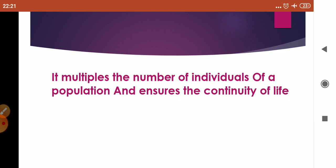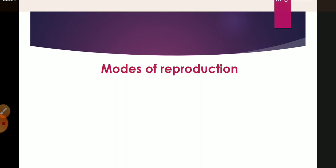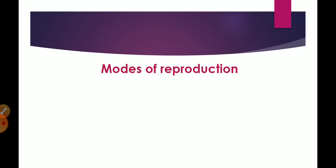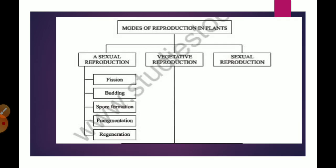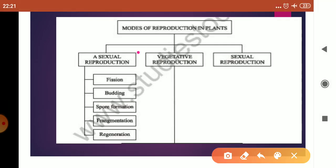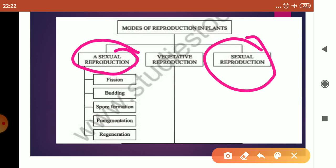Now let us move on to the modes of reproduction. As I have told you, basically there are two modes of reproduction — asexual reproduction and sexual reproduction. But a few plants follow one more mode called vegetative reproduction.